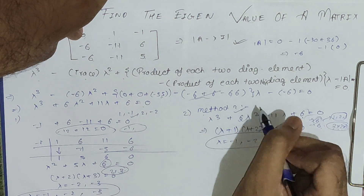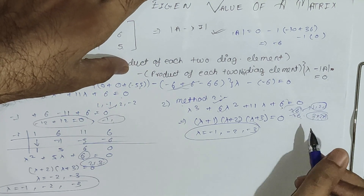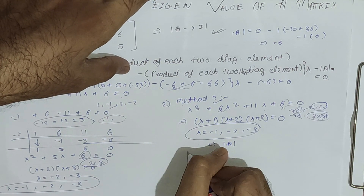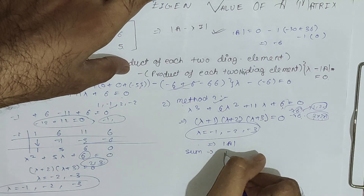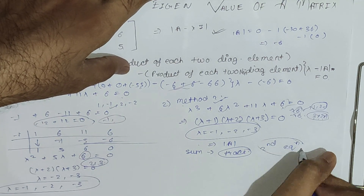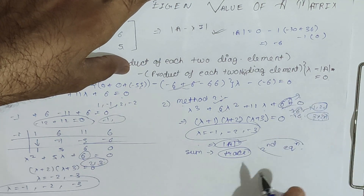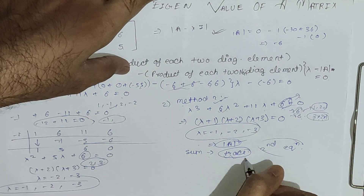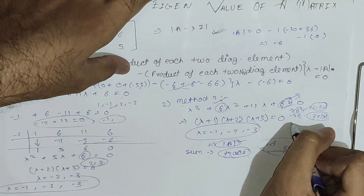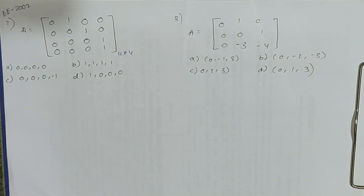You may wonder how Method 2 was derived. It uses two known properties: the product of all eigenvalues equals the determinant of the matrix, and the sum of all eigenvalues equals the trace. The determinant corresponds to the last element of the characteristic equation and the trace corresponds to the second element. That is exactly what I have used — product of all three roots equals 6 and sum equals 6.